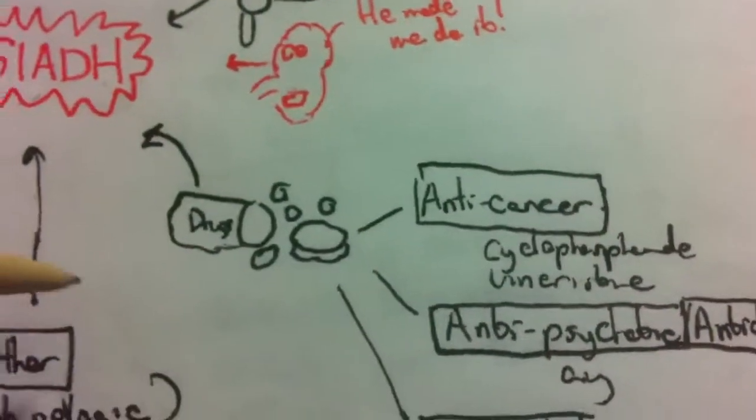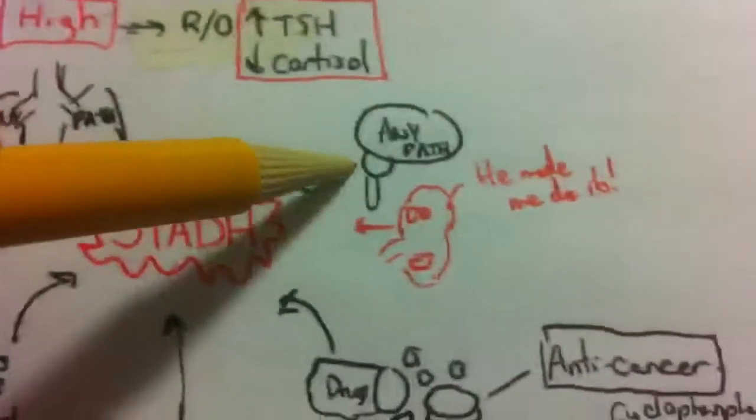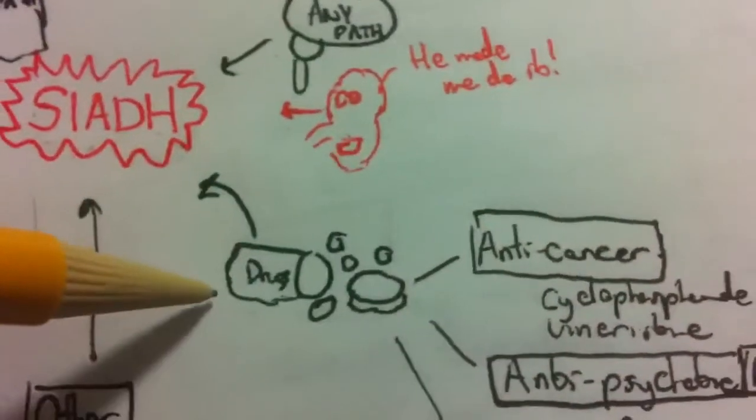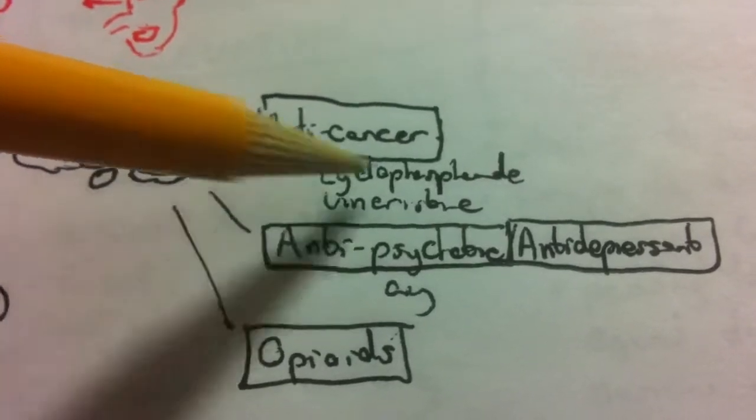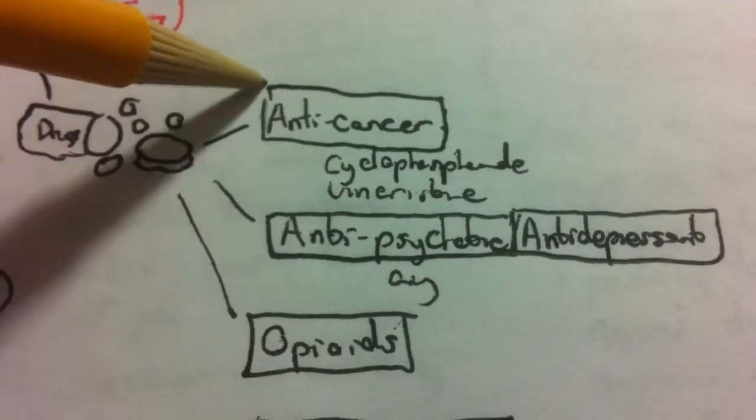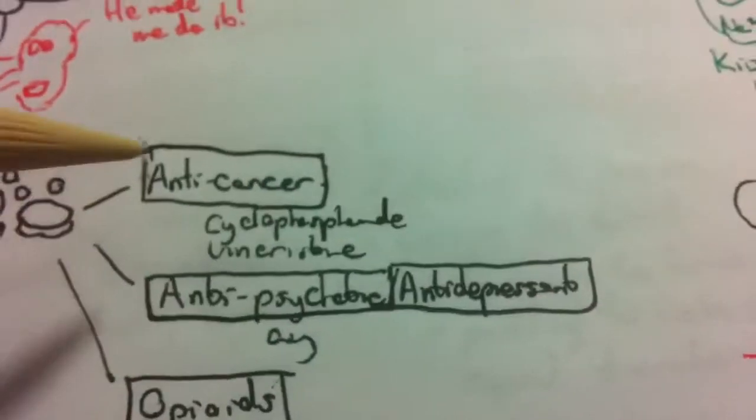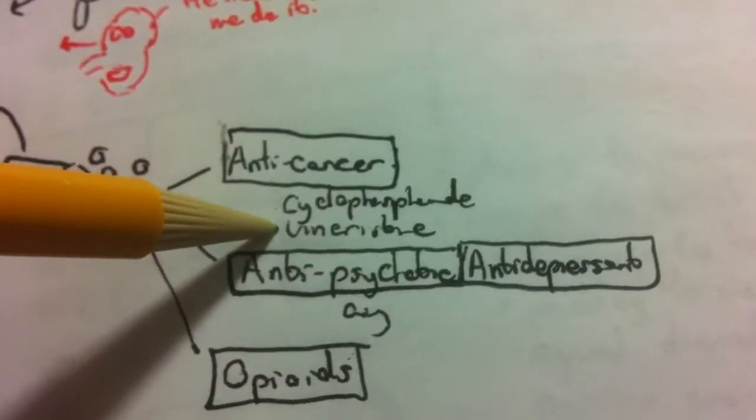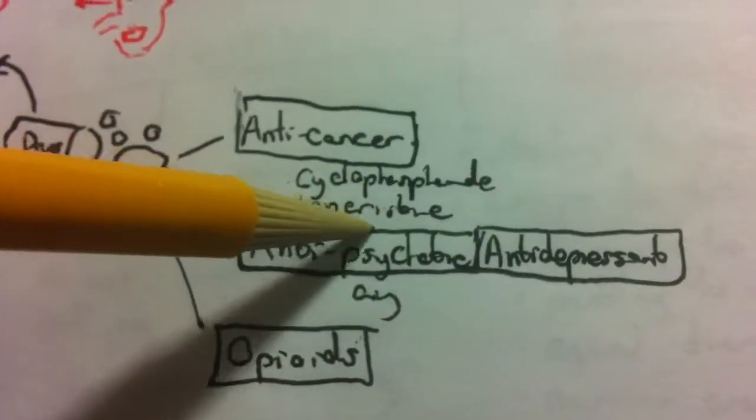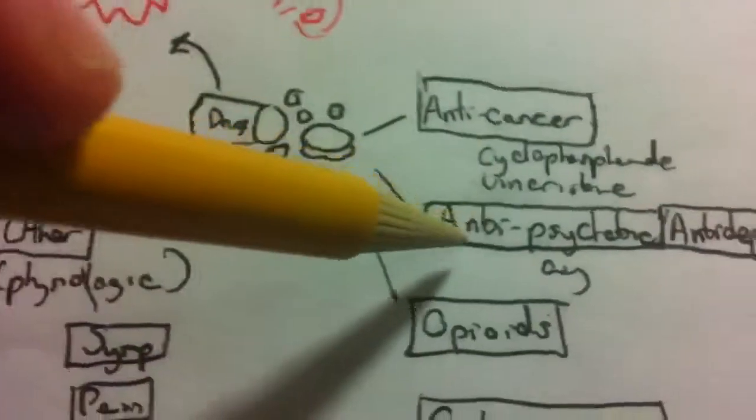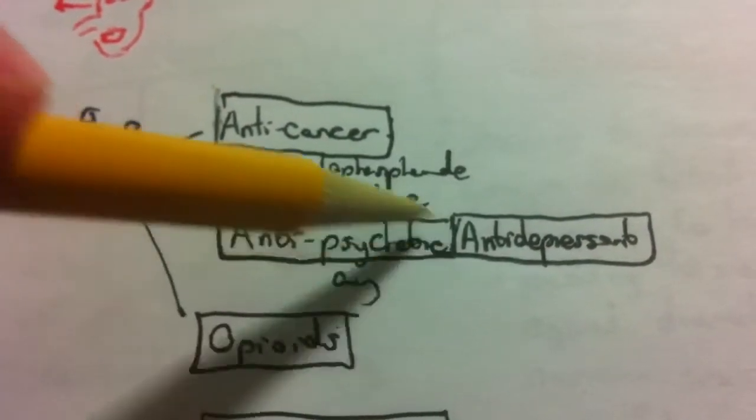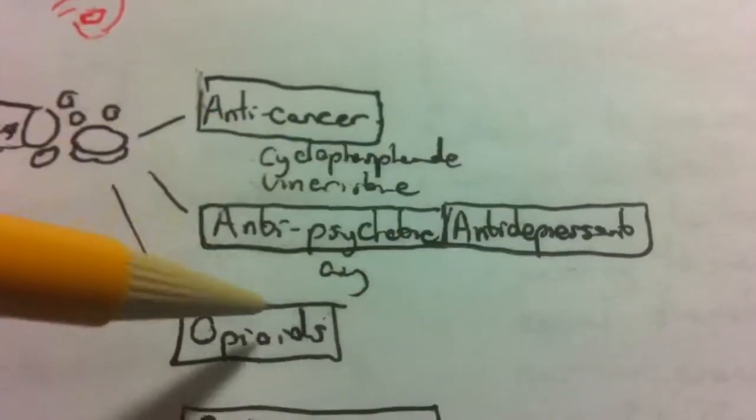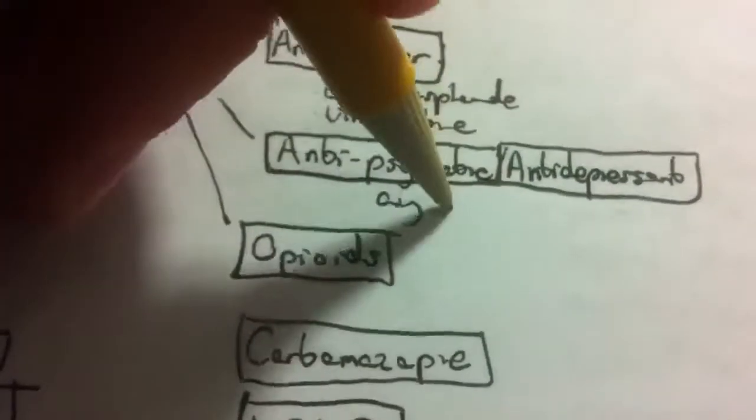Okay, so lung, CNS, cancer, and drugs. Now, so anti-cancer drugs. So you're seeing there's a lot of reasons for someone with cancer to have hyponatremia here. Cyclophosphamide, I don't even know what that says, vincristine. And then these ones are big culprits I see all the time, antipsychotics and antidepressants. Any.